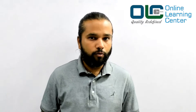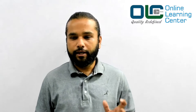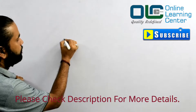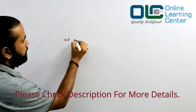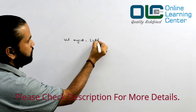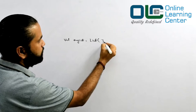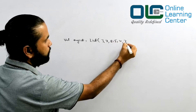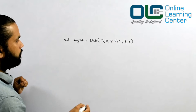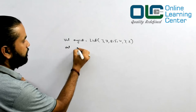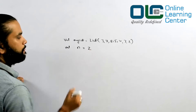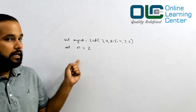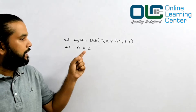All right, so let's try to solve one more problem today. The problem is very, very simple. Given a list — my list is equal to a list of some numbers: three, seven, eight, five, four, three, two — and given a number, let's say n is equal to two, find out the last element of that number.